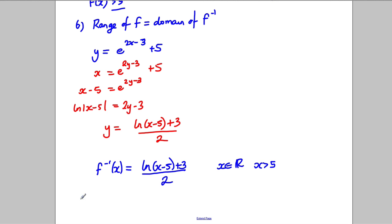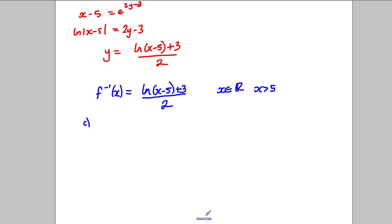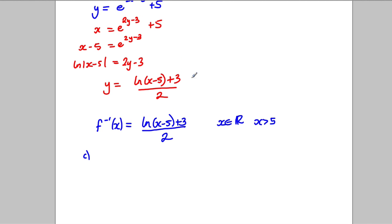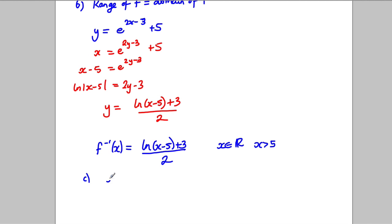For part c, solve the equation f of x is equal to 7. So we're going to solve the equation f of x, which is e to the power of 2x subtract 3, add 5, is equal to 7.